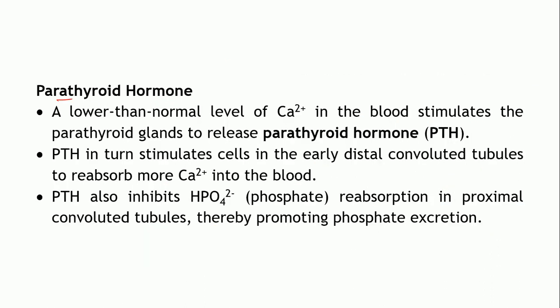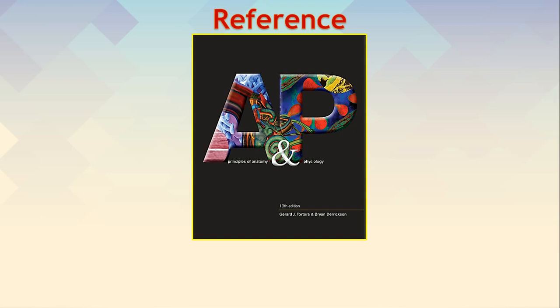The final hormone regulating these processes is parathyroid hormone (PTH). When blood calcium levels are low, the parathyroid glands release more PTH, which stimulates cells in the early distal convoluted tubules to reabsorb more calcium. PTH also inhibits phosphate reabsorption in the proximal convoluted tubule, thereby promoting excretion of phosphate ions from the body.